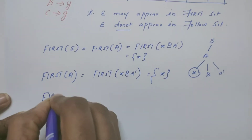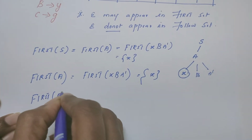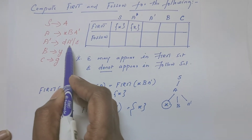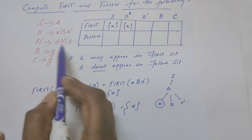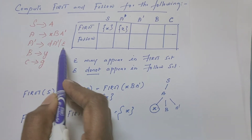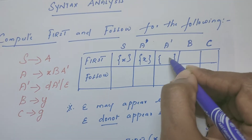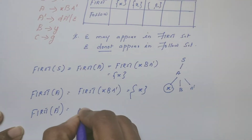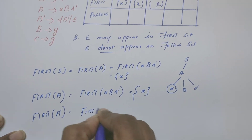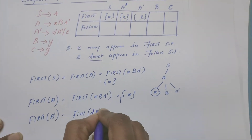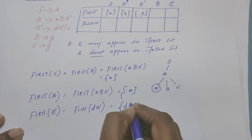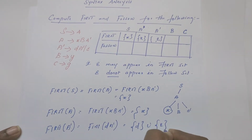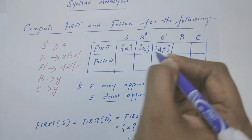Next we are going to compute first of A dash. For A dash, there are in fact two alternatives: one is DA dash, another one is epsilon. Since A dash directly produces epsilon, first of A dash includes epsilon. What is the other rule we have? We have DA dash. So first of A dash is nothing but first of DA dash, which is nothing but D. So first of A dash contains two symbols: D and epsilon. I have filled the table here.